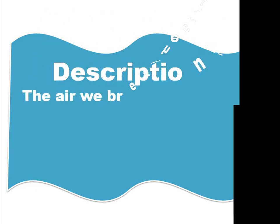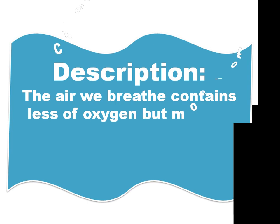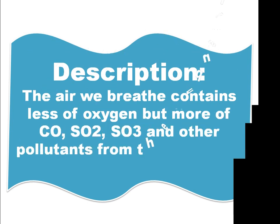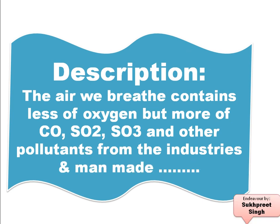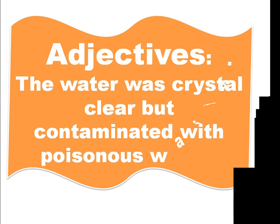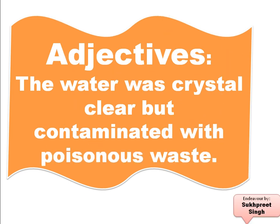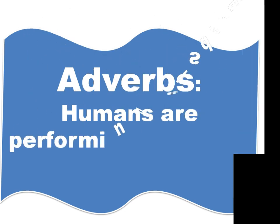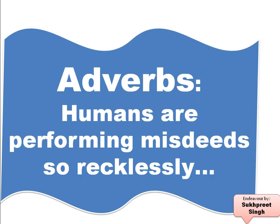It also fetches you more marks. Article writing can also start with a description, for example: 'The air we breathe contains less oxygen but more carbon monoxide, SO2, SO3, and other pollutants from industries.' Or you can use a striking image: 'The water was crystal clear but contaminated with poisonous waste.' We can also use adverbs: 'Humans are performing misdeeds so recklessly that the environment has been contaminated to the extreme degree.'